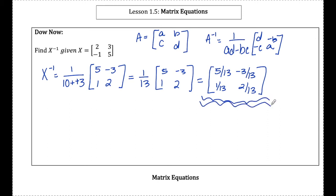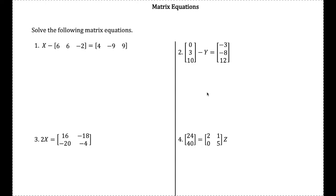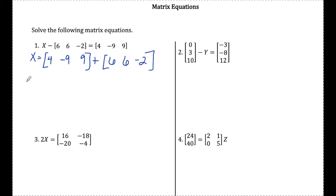Let's start looking at solving some matrix equations. Problems 1 and 2 are nice and simple, super straightforward. In number 1, I have X minus a matrix equal to another matrix. In order to get X by itself, I just need to add this matrix over to the other side. When I do that, I'll have the matrix 4, negative 9, 9 plus the matrix 6, 6, negative 2. Since these are the same dimensions, I add corresponding elements: 4 and 6 is 10, negative 9 and 6 is negative 3, and 9 minus 2 is 7. So there's the matrix X.